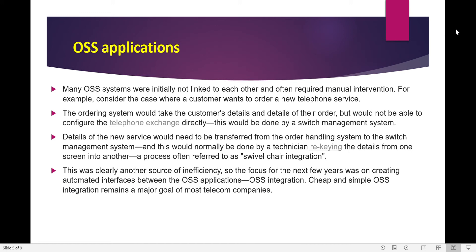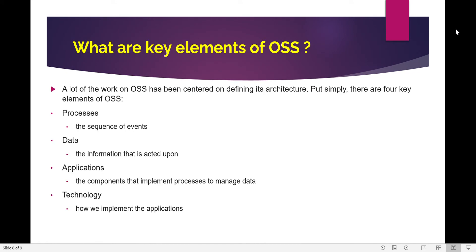Cheap and simple OSS integration was the major goal of most technical companies. Now let's look at the key elements of OSS. A lot of work on OSS has been centered on defining its process architecture. Simply put, there are four elements of OSS processes: sequence of events; data, which is the information that is acted upon; applications, which are the components that implement processes to manage the data; and technology, which is how we implement the applications.